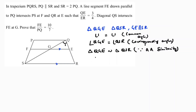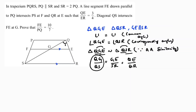Therefore triangle QGE is similar to triangle QSR by angle-angle similarity. Writing sides proportional: QG by QS equals GE by SR equals QE by QR. I don't have the value of QG by QS, so I'll use GE by SR equals QE by QR. QE is 3 and QR is 7.